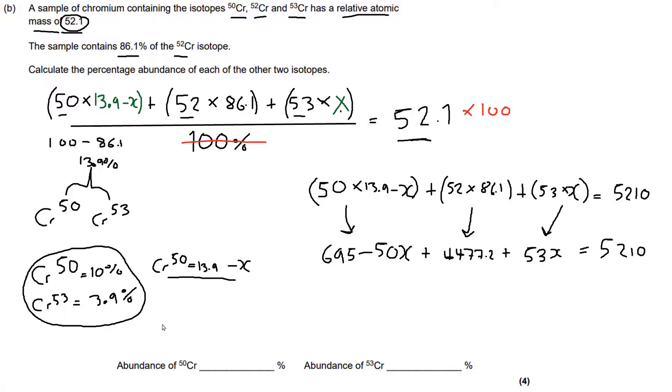Brilliant. Now what we need to do, let's cancel those x's. 53x plus minus 50x. We're going to be left with 3x. So running out of room here. We're left with 3x equals 5,210. Let's add 695 and 4477.2 together. And what we're going to get,